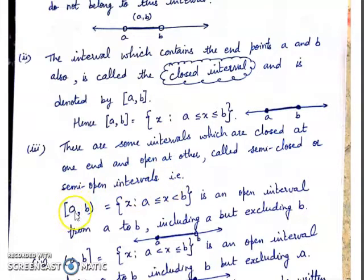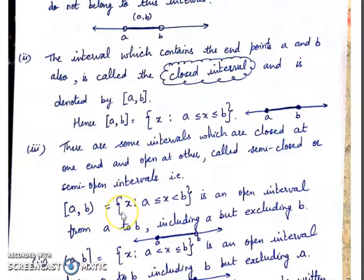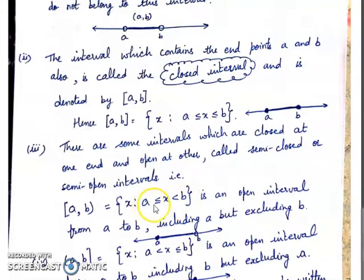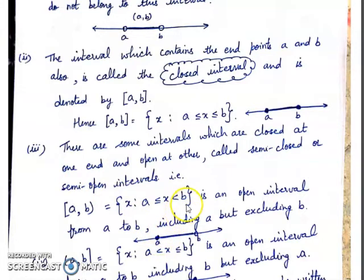Suppose the interval is closed at A and open at B: A is included but B is excluded. On the notation side of A we put a rectangular bracket, and on the side of B we put a small bracket, giving [A, B). In roster form it is written as: X such that A ≤ X < B. Because A is included, we write less than or equal to; because B is not included, we write strict inequality. On the number line, at A we put a dark circle and at B we put an open circle.